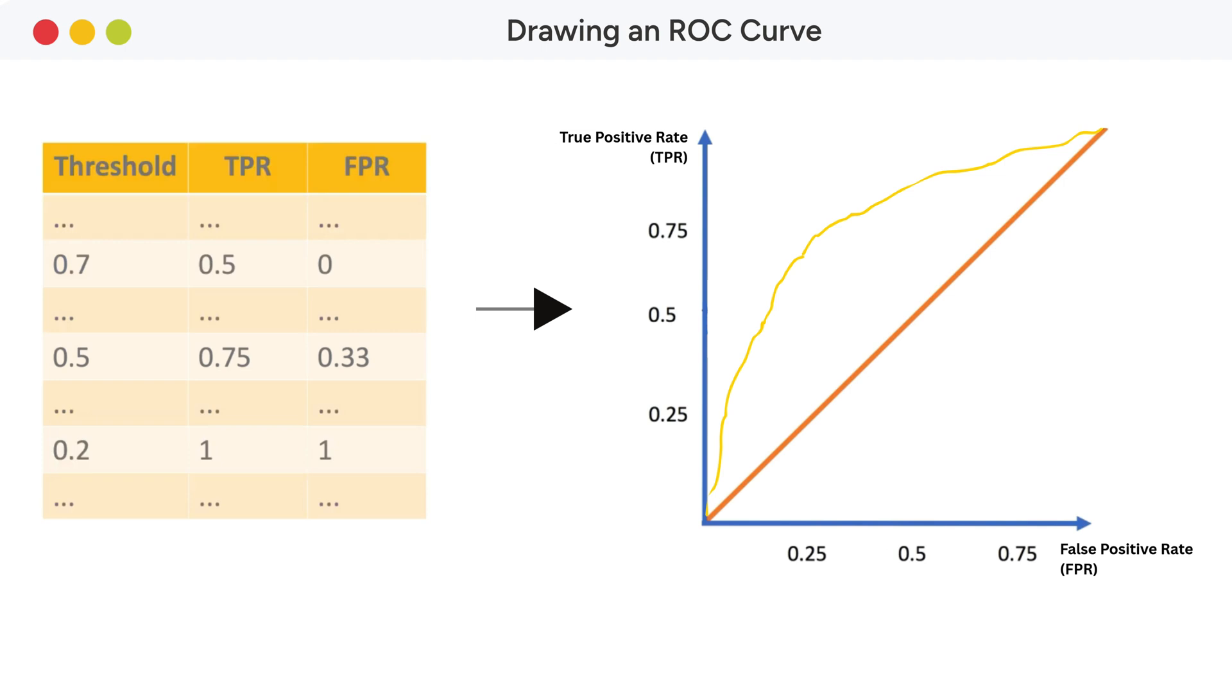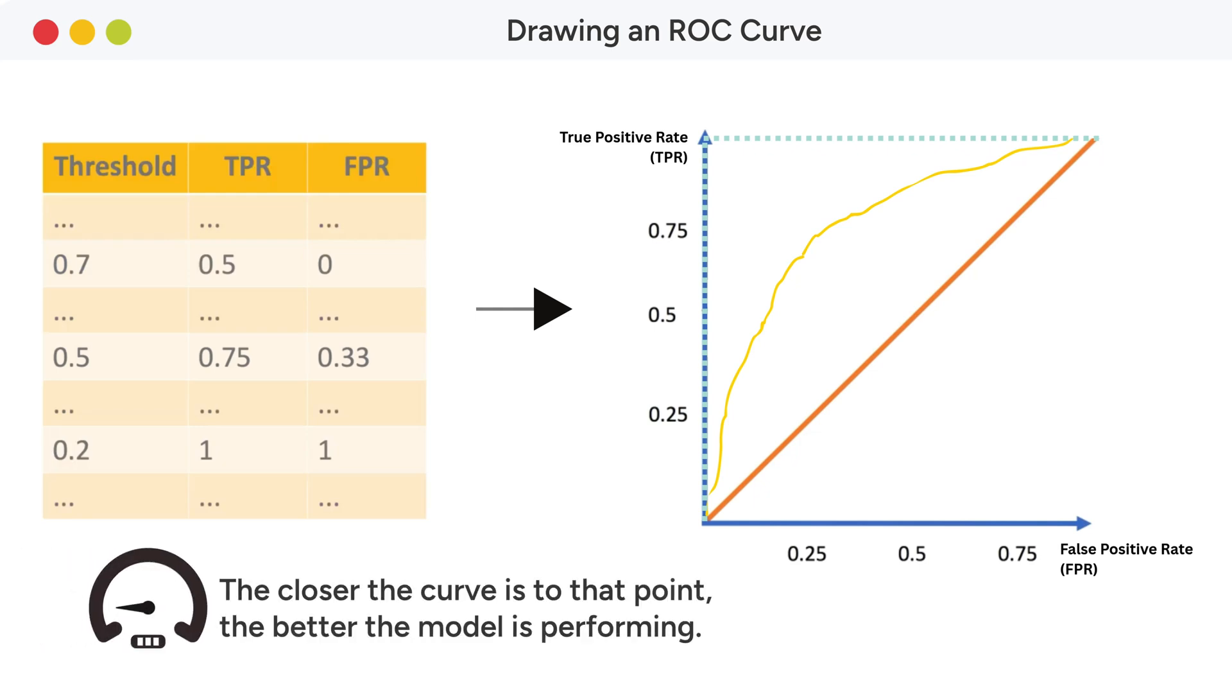The ROC curve of a perfect classifier will move along the axis to reach the point where the true positive rate is 1 and the false positive rate is 0. The closer the curve of our model is to that point, the better the model is performing.